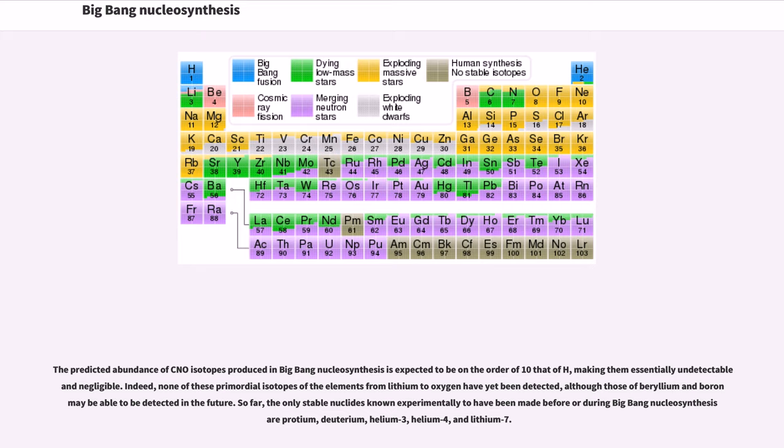The predicted abundance of CNO isotopes produced in Big Bang nucleosynthesis is expected to be on the order of 10 to the negative 15 relative to hydrogen, making them essentially undetectable and negligible. Indeed, none of these primordial isotopes of the elements from lithium to oxygen have yet been detected, although those of beryllium and boron may be able to be detected in the future. So far, the only stable nuclides known experimentally to have been made before or during Big Bang nucleosynthesis are protium, deuterium, helium-3, helium-4, and lithium-7.